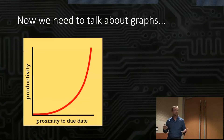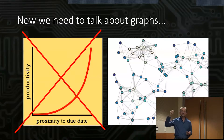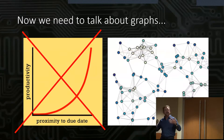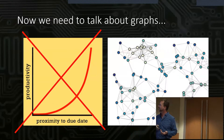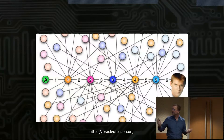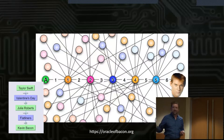Before we go any further, we need to talk a little bit about graphs — not bar charts, but graphs that have vertices and edges. Vertices are the little circles, you can think of them as nodes. The edges are the things that connect the nodes. So, Taylor Swift was in Valentine's Day with Julia Roberts, who was in Flatliners with Kevin Bacon.